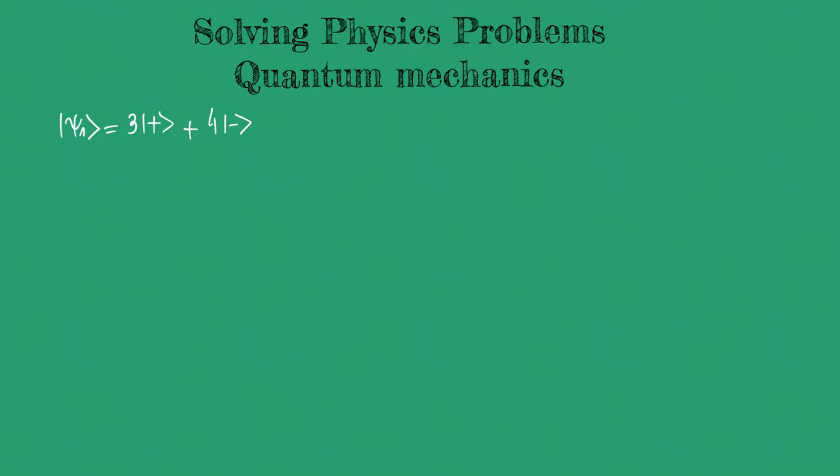When it comes to quantum mechanics, the first thing we want to do is to normalize our quantum state. The reason for that is simple — usually what comes after is finding probabilities, so our quantum state must be normalized. Otherwise, we will end up with a probability higher than one.